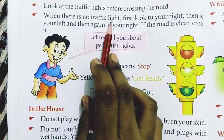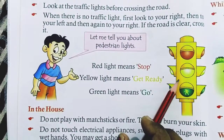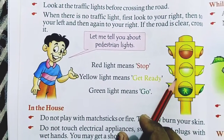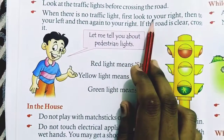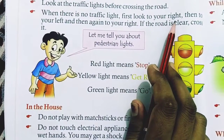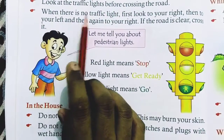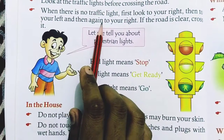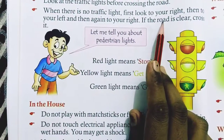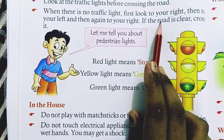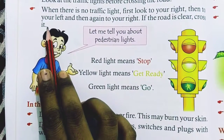If there is no traffic light, first look to your right, then look left, then look right again. When it is clear, then you will cross the road.